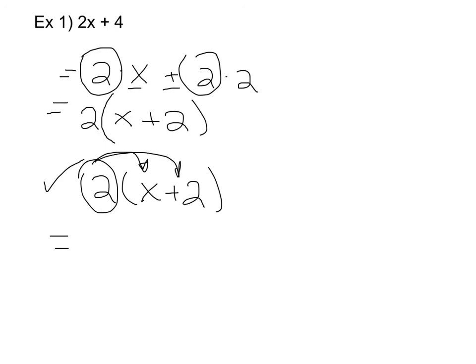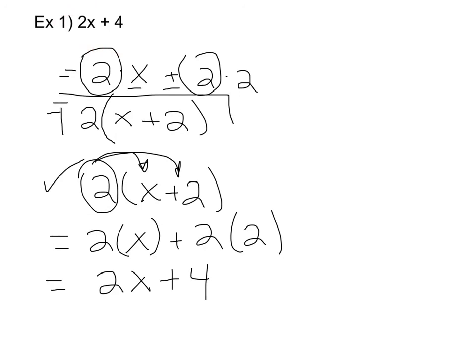that's going to give me 2 times x plus 2 times 2, which gives me 2x plus 4. Notice that I am back to where I started from, so I know I have factored correctly. My answer is 2 times the quantity x plus 2.